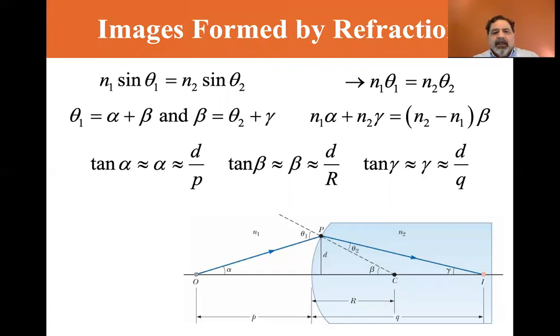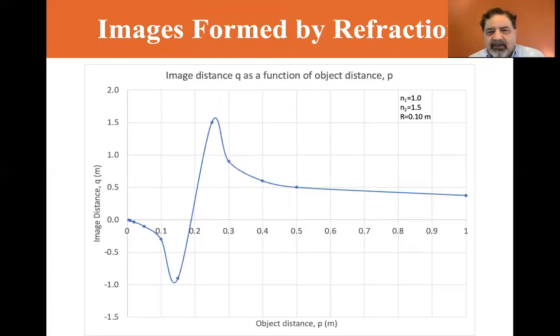And sure enough, plotted it out. And sure enough, it does, as you, what we have here, N1 is equal to air, 1.0, N2 is equal to 1.5 glass, and R is equal to 10 centimeters, 0.1 meters. So the radius is 10 centimeters. And I varied the P, the object distance, starting from one meter, and plotted what the image distance would be.